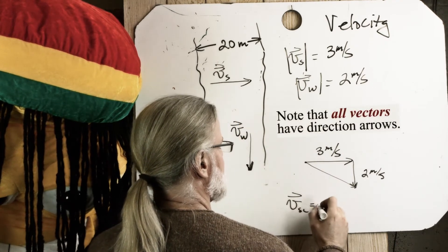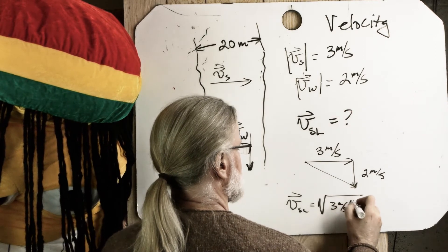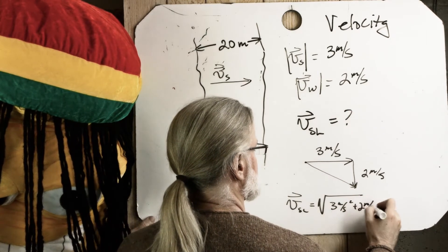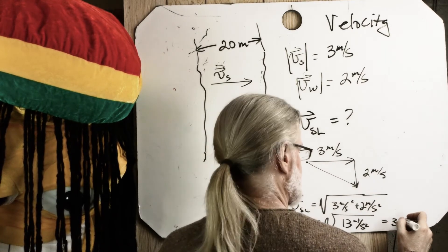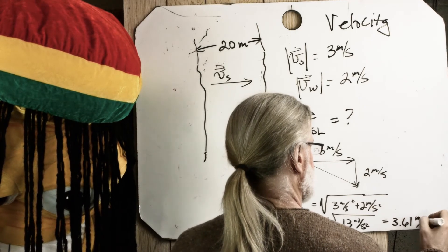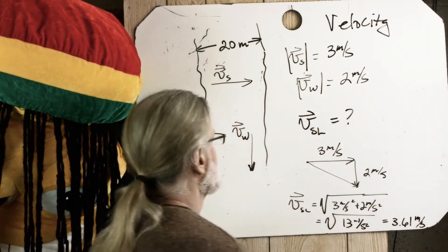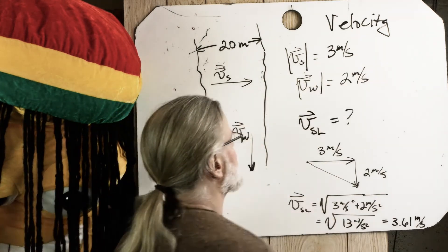Relative to the land is three meters per second squared plus two meters per second squared. 3.61 meters per second is the magnitude. So we have to give her a direction.